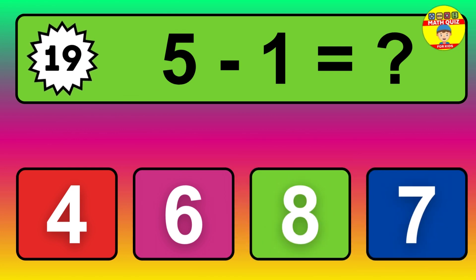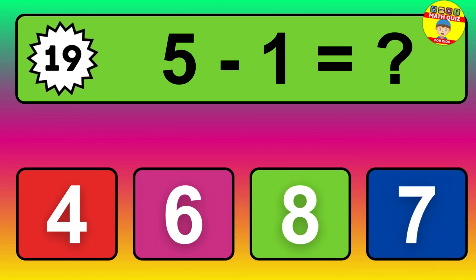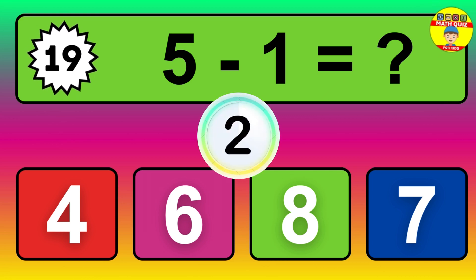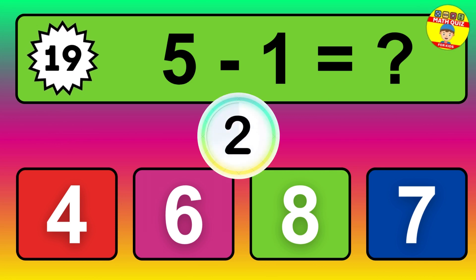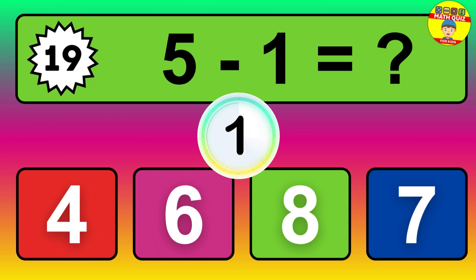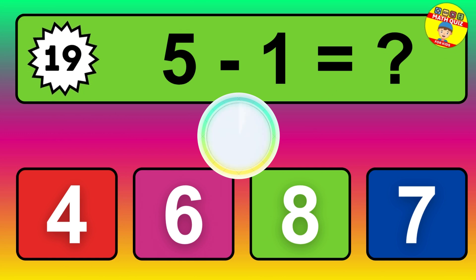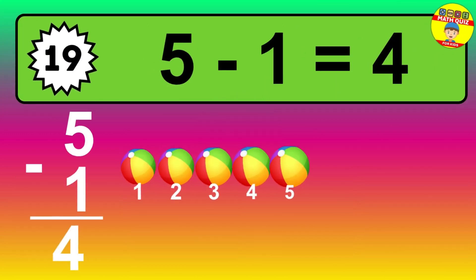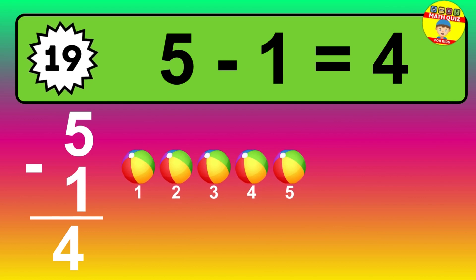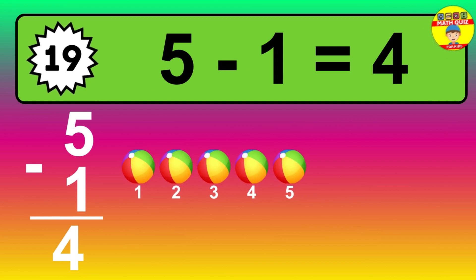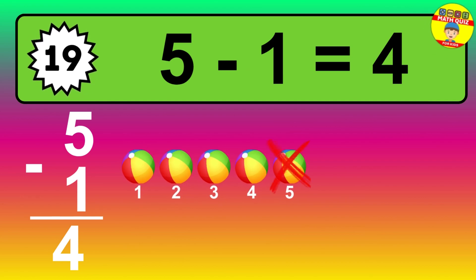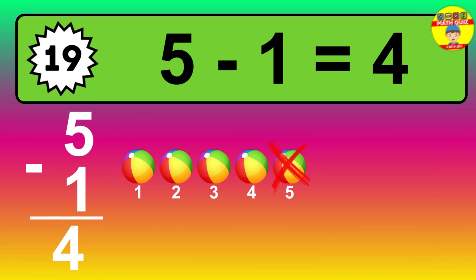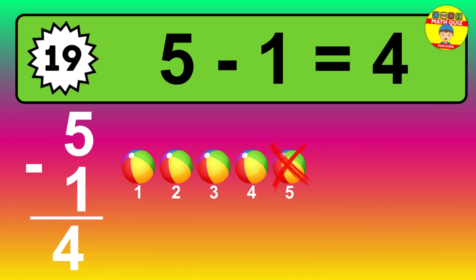Question nineteen: five minus one equals what? So the answer is five minus one is four. Let's count it. One, two, three, four.